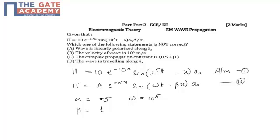Now, I know that propagation constant is equal to alpha plus j beta. So, substituting the value 0.5 plus j. Beta is 1.